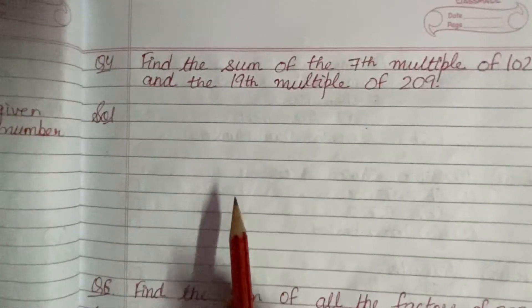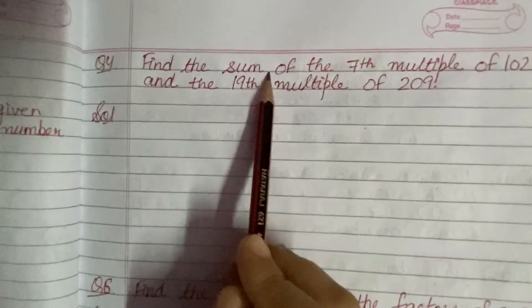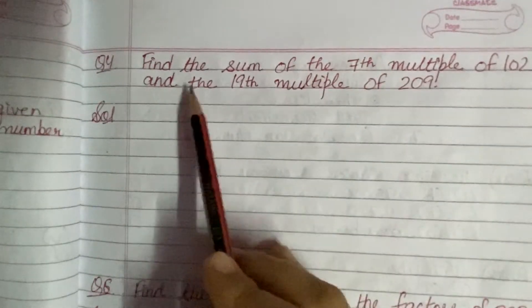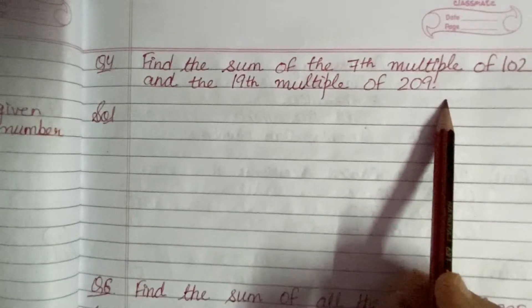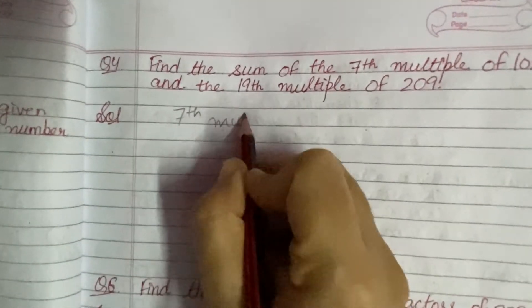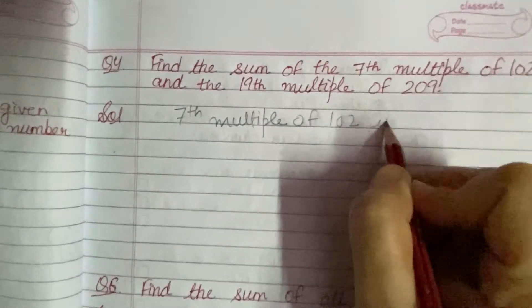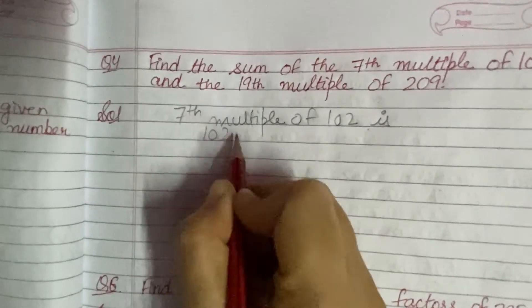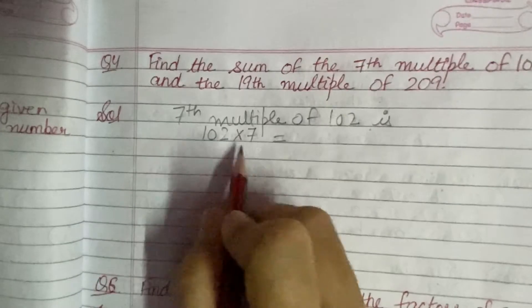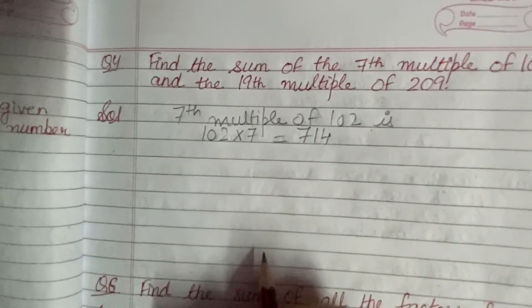Now next I have taken question number 4. It says: find the sum of the 7th multiple of 102 and the 19th multiple of 209. Now the 7th multiple of 102 is given by multiplying 102 by 7, which gives you 714.